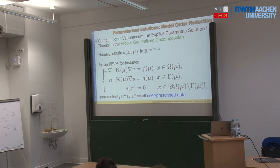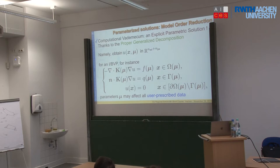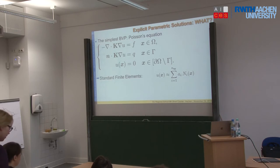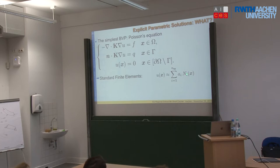That's the problem I'm willing to solve. I want to obtain the solution U, which will depend on space and also on all these parameters — so it actually lives in a quite large-dimensional space. Imagine a simple 2D problem with only two parameters: I'm already in a 4D problem if I want to discretize everything. The classical approach is that we all know how to solve this using finite elements — you give me one set of parameters, I plug them in and solve. We are all used to writing the solution as a linear combination of shape functions times some coefficients.